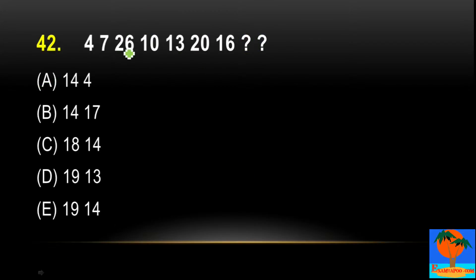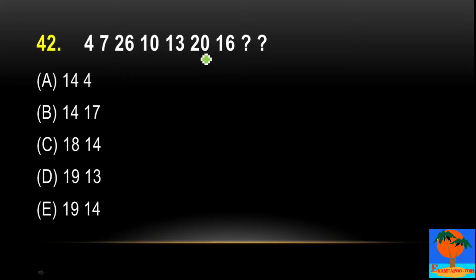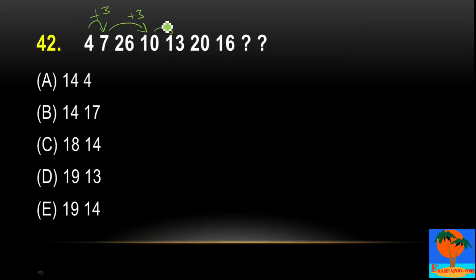Next question, question number 42: 4, 7, 26, 10, 13, 20, 16, then question mark, and then question mark. Again, what I can see here — 4, 7, then 26 abrupt change, 10, 13, then 20 abrupt change, then 16. I can see 4, 7, 10 — that is plus 3. And 10, 13 — plus 3. So two series are mixed.